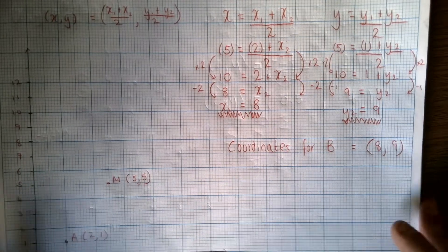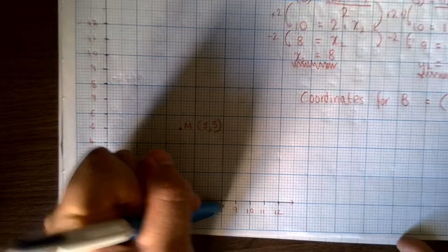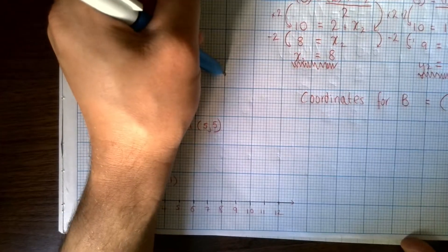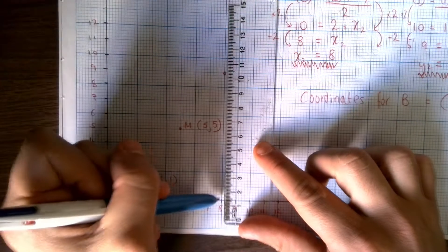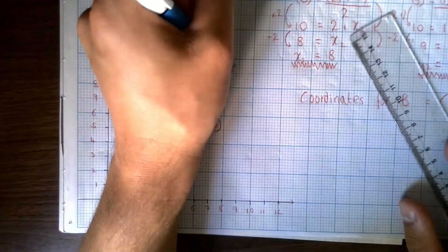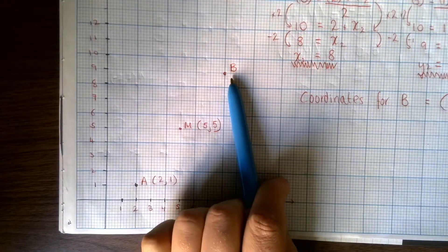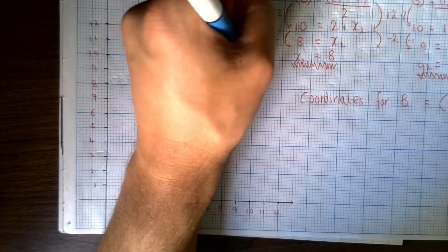Okay, and we're going to plot that on my graph now. So we're going to go along to 8 and all the way up to 9. Now, if you need to, use a ruler just to make sure you don't make a mistake. So you could go across the way like this and all the way up to 9. So this is B. And the question may well tell you to plot B once you've found its coordinates. So B, 8, 9.